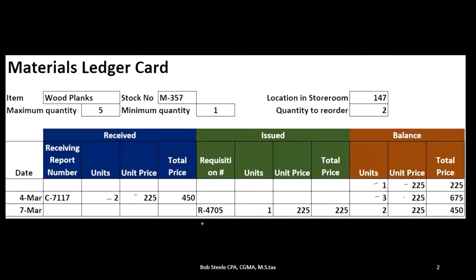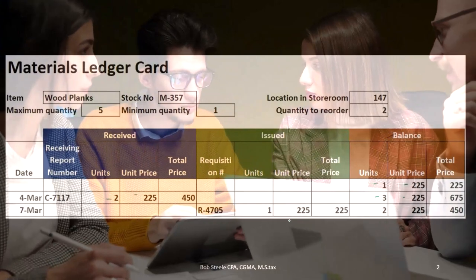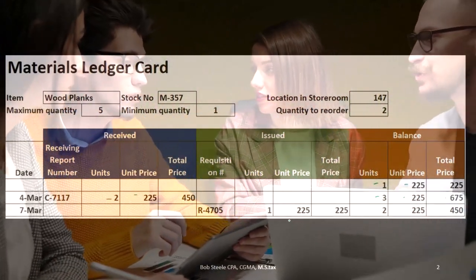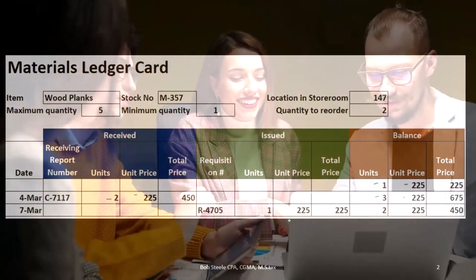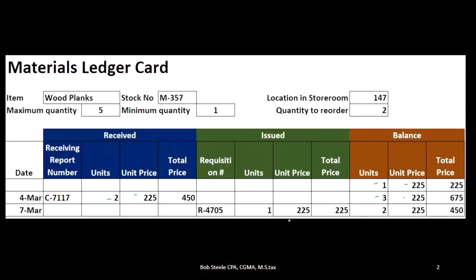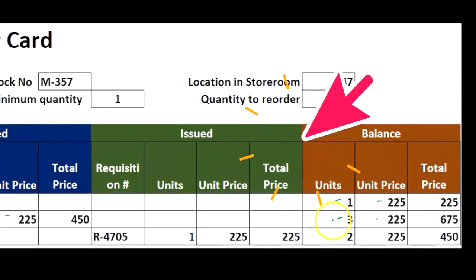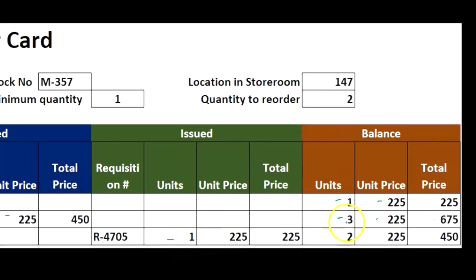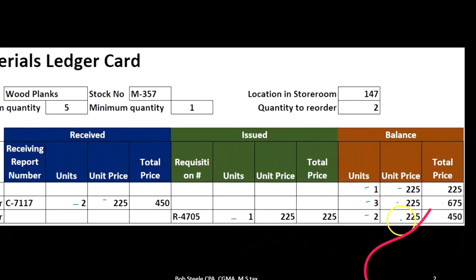The requisition form comes from the work in process — the factory — indicating they have a project to work on. We're going to say that's for one unit, one plank, at a cost of $225. Notice this isn't the sales price; we're dealing with internal transfer from one department to another, from warehouse to the factory. Looking at the balance, we had three units and just issued one, so two units remain at $225 each, giving us $450.